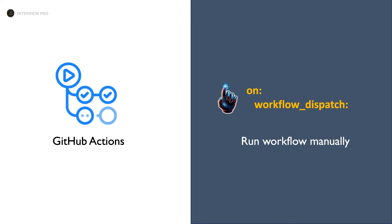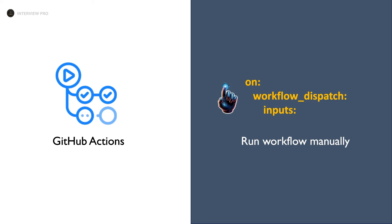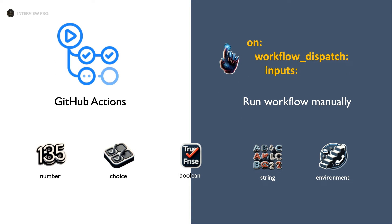Not just a dropdown to select the branch — we can also provide other inputs to the workflow when it is triggered manually. To specify inputs, we use the property 'inputs' under the workflow_dispatch event. There are five types of inputs that can be passed to a workflow: number, choice, boolean, string, and environment. We'll cover the environment input type in upcoming videos. In this video, let's focus on the other four.